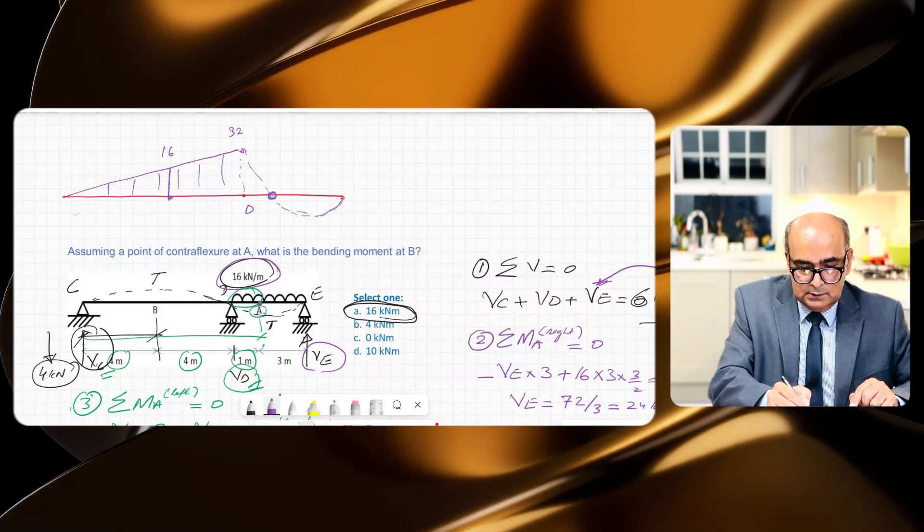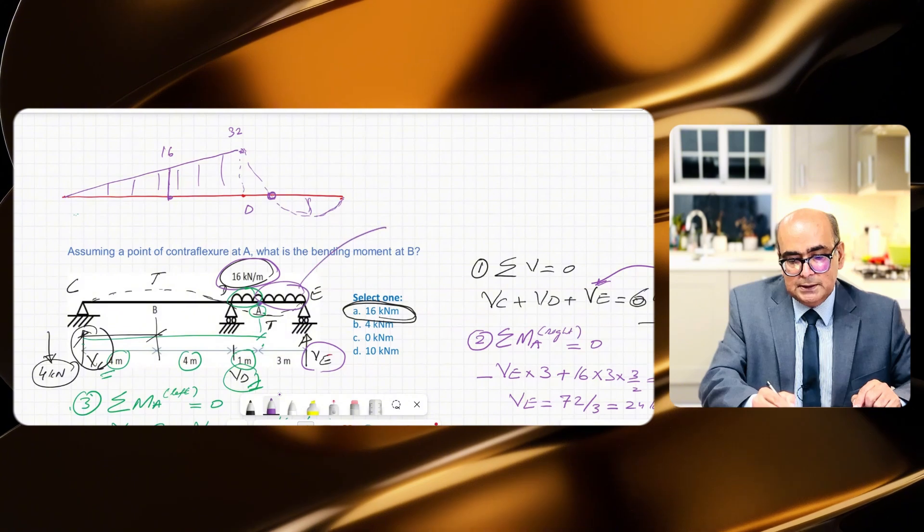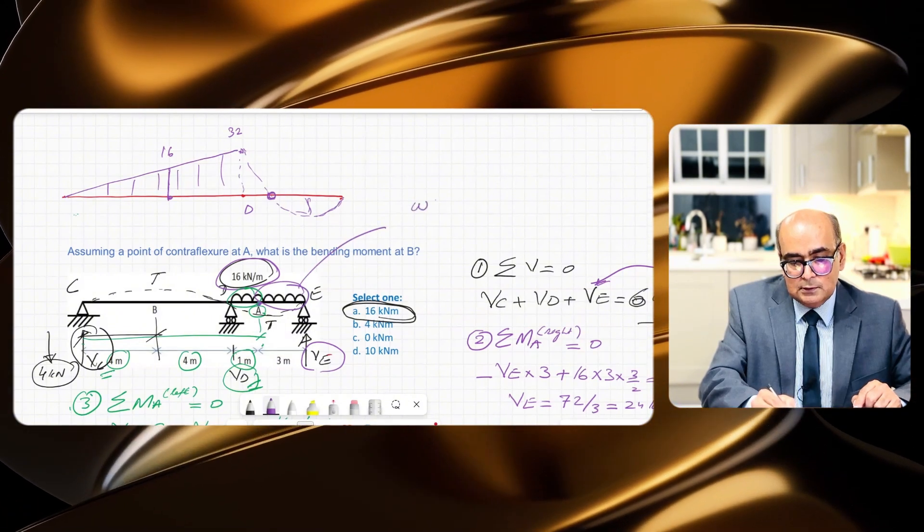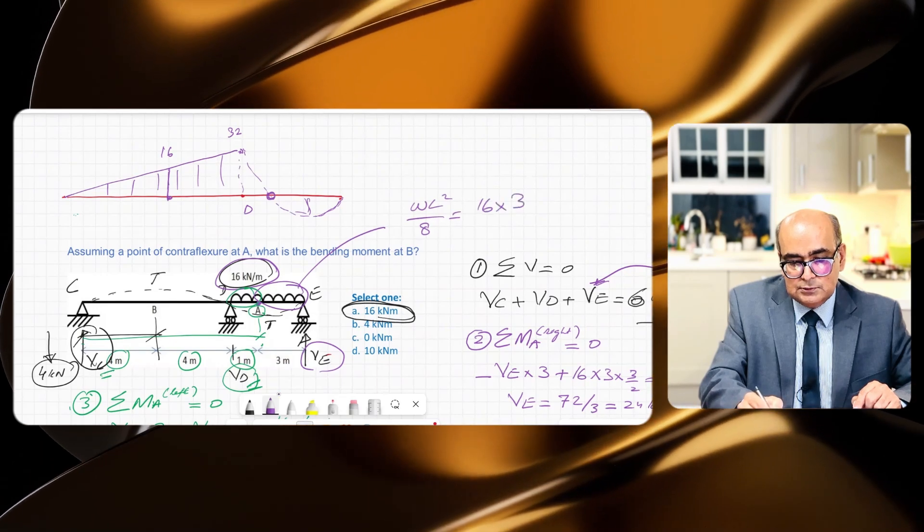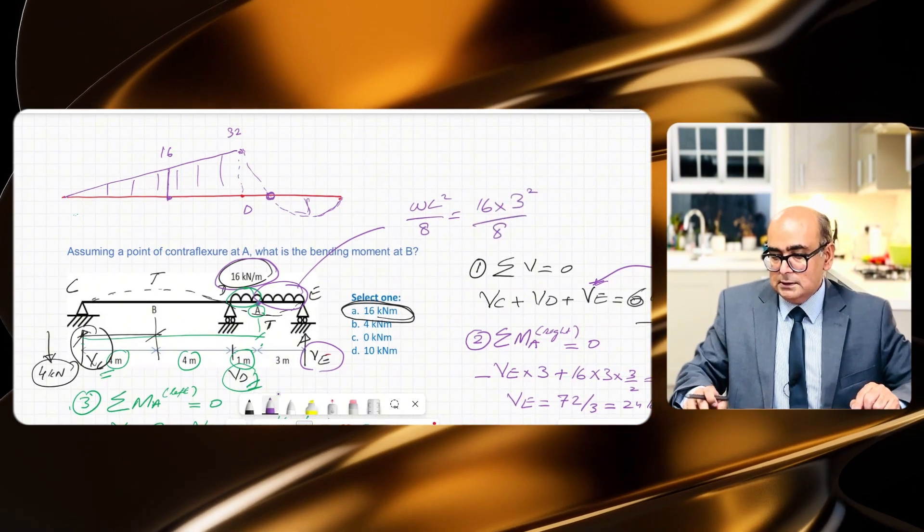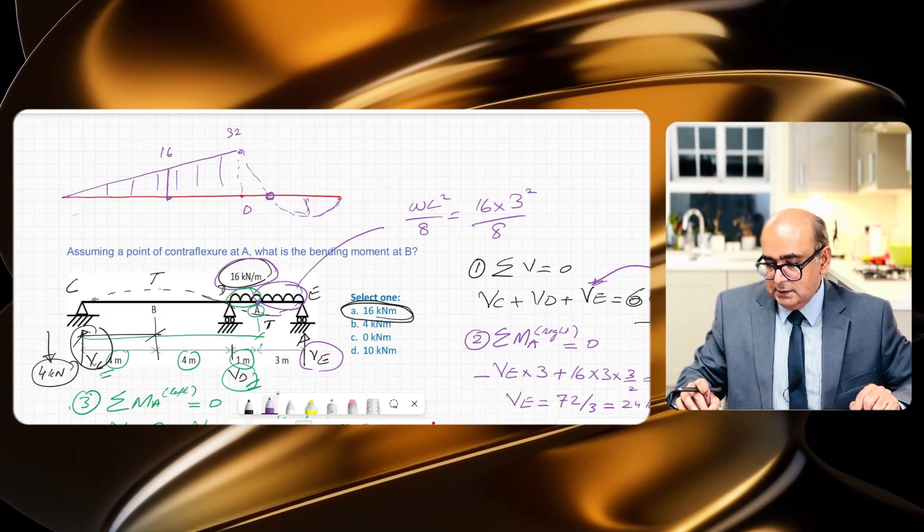And then it will go through here. And between this point and this point that will be WL squared over 8. So WL squared over 8 will be 16 times 3 squared divided by 8, so 16 times 9 divided by 8, it will be 18 kilonewton meters.